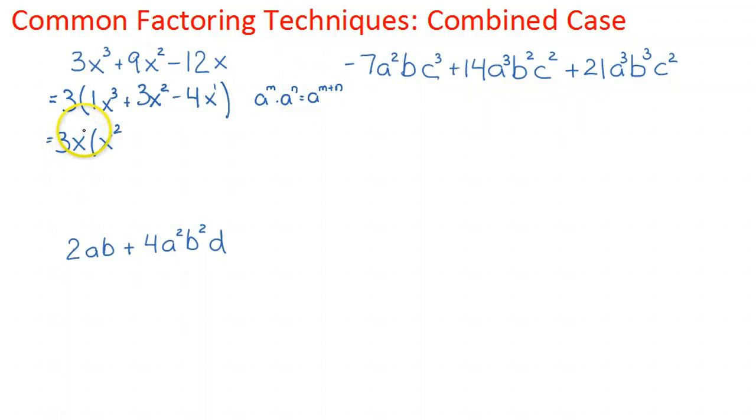So x times x to the power of what gives me x², and the answer is x. And if I have x¹, x¹ times what gives me x¹, the answer is just 1. So that's x² + 3x - 4, and it's factored.